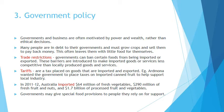Things happening in government that affect food availability include trade restrictions — add this to your glossary. This is where governments can ban certain foods from being imported or exported, to make imported goods less competitive than locally produced goods and services, and to boost the amount of locally made products that are sold. Imported means things we bring into the country, and exported means things we grow or make here and sell to other countries.